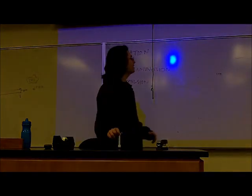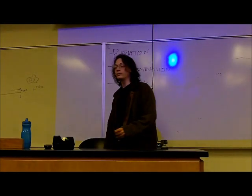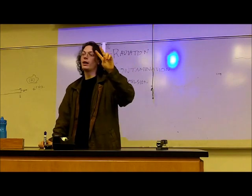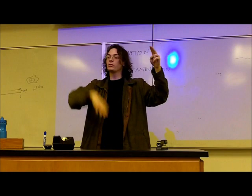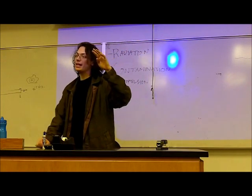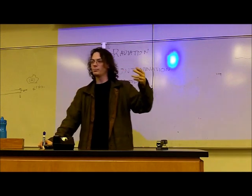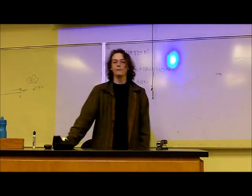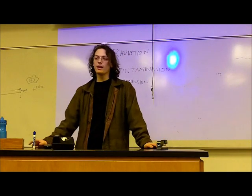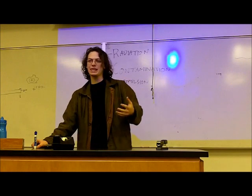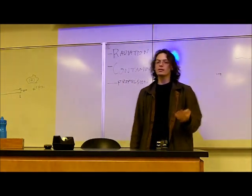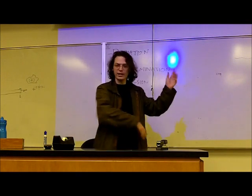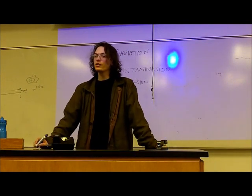Radiation doesn't go on forever — it's stopped by stuff. Two inches of lead will cut the strength of radiation by 90%. The next two inches cut it by 90% again, and so on — so four inches of lead brings you down to 1%. Two inches of lead is called the 'tenth thickness' of lead. The tenth thickness for steel is four inches, and 12 inches of water does the same thing.